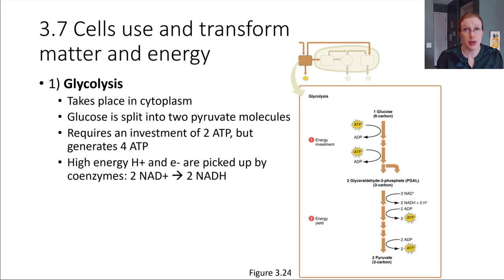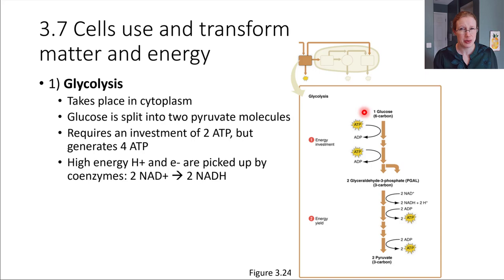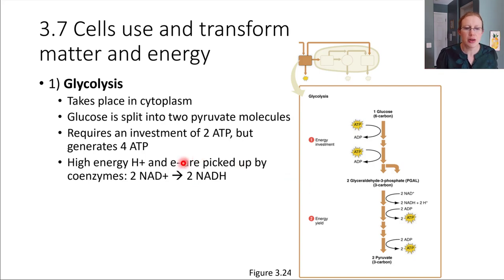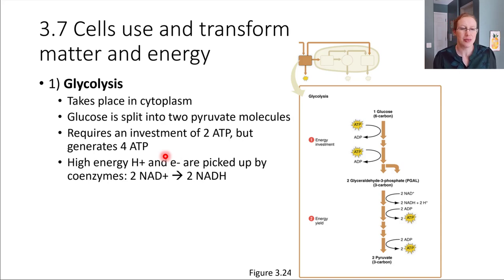Glycolysis takes place in the cytoplasm. What happens is the glucose molecule we start with gets split in half. In order to do that, we have to put in a tiny bit of energy — this requires two molecules of ATP to split the glucose in half. But in the end, we get four ATP molecules back, so the net result is that we generate two ATPs. In the process of breaking the glucose apart, that frees up some electrons and hydrogen ions, which get picked up by a coenzyme called NAD+. When it picks up those electrons and hydrogen ions, it becomes NADH.